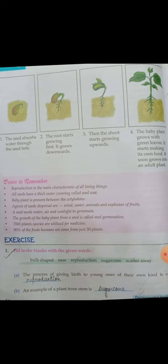Question number one, fill in the blanks with the given words. A. The process of giving birth to young ones of their own kind is called dash. The process of giving birth means birth dena, young ones ko own kind. It is what it means? Reproduction. So write reproduction.